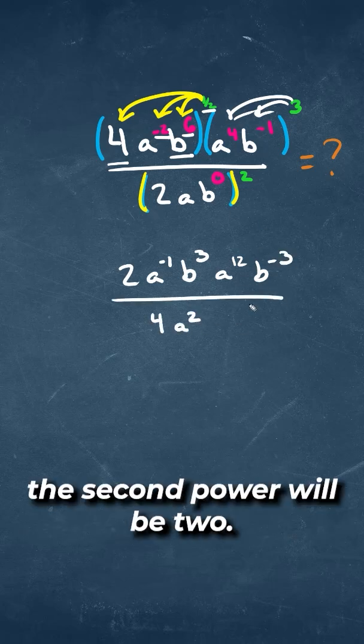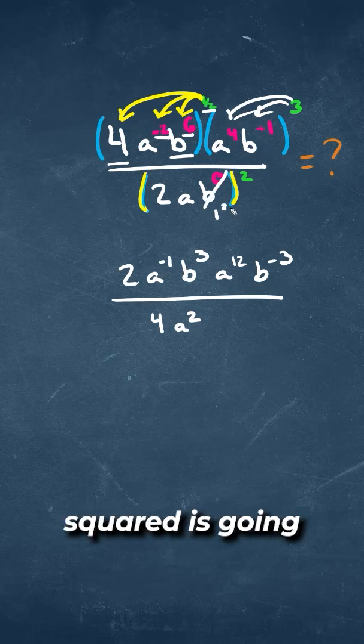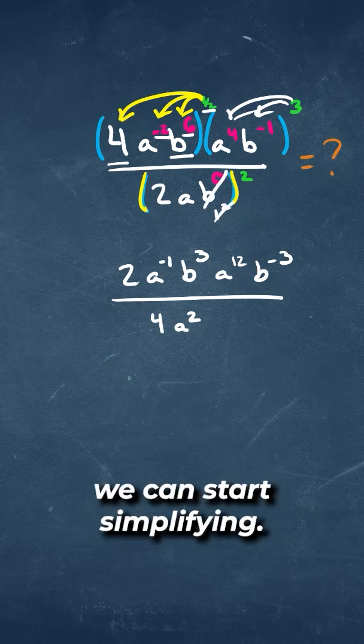A raised to the 2nd power will be 2. This B raised to the 0 is 1, so 1 squared is going to just be 1. And now we can start simplifying.